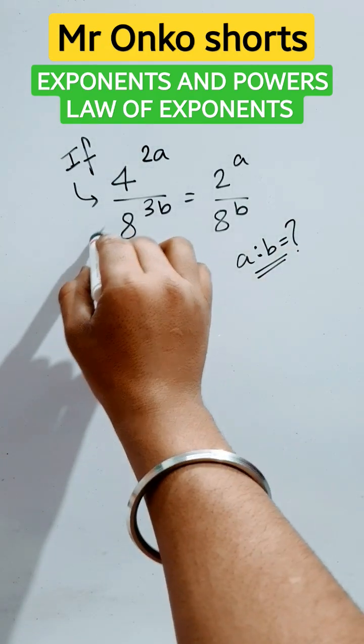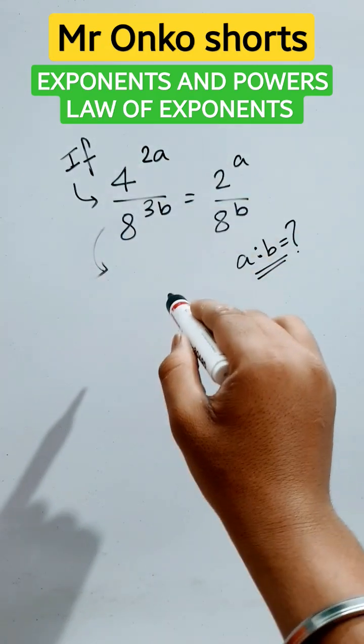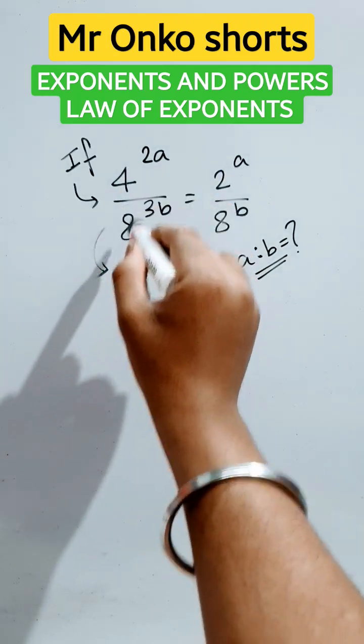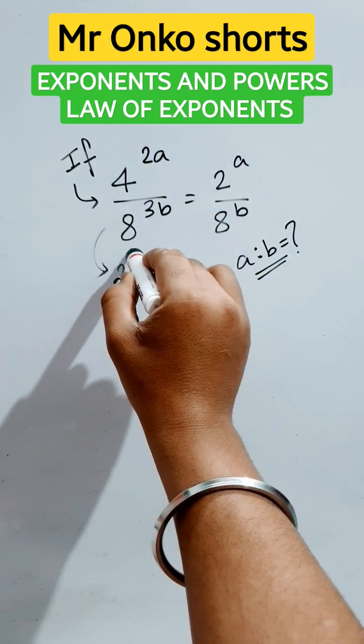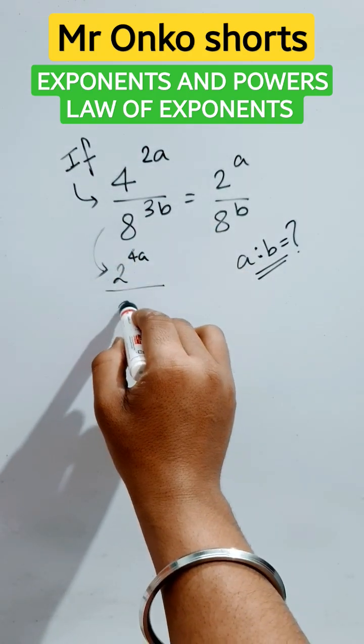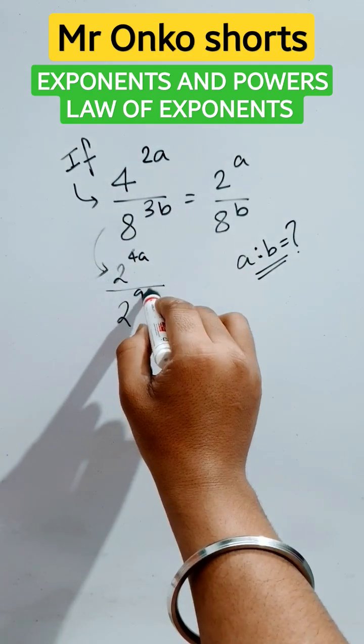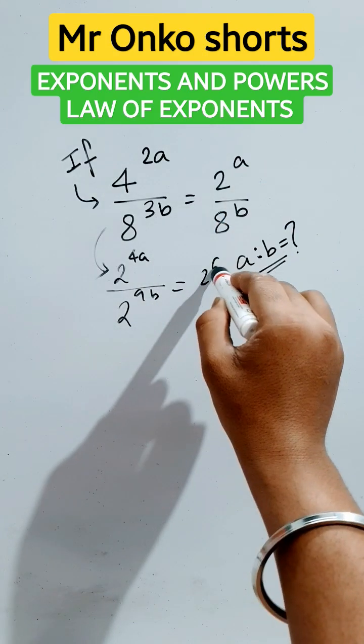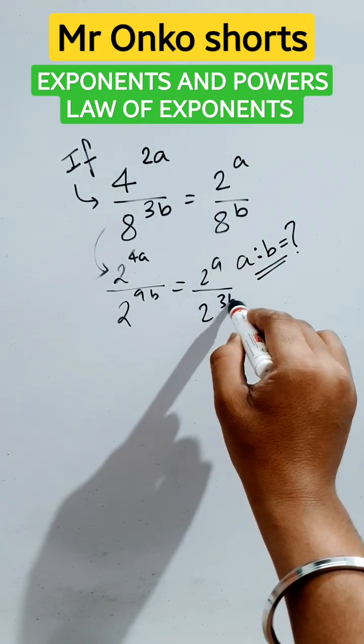First of all, we have to simplify this using the indices law, laws of exponents. So, 4 to the power 2a can be written as 2 to the power 4a divided by 8 to the power 3b, that is 2 to the power 9b, equals 2 to the power a divided by 2 to the power 3b.